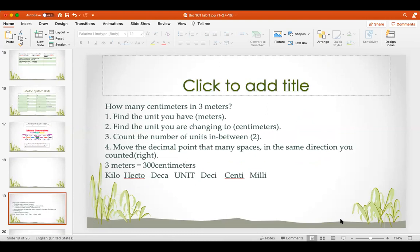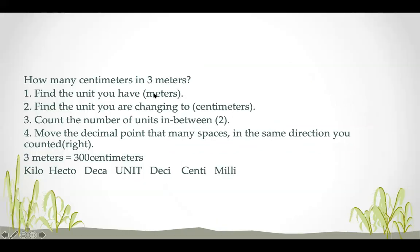How many centimeters are in three meters? First, find the unit you have — meters. Find the unit you're changing to — centimeters. Count the number of units in between on the chart. Going from a meter (the base unit) to the centimeter, you move the decimal place two spots to the right and fill those spots with zeros. So three meters equals 300 centimeters.